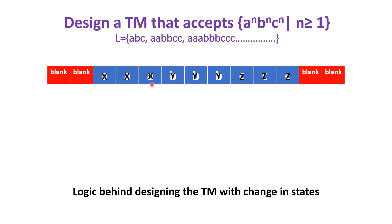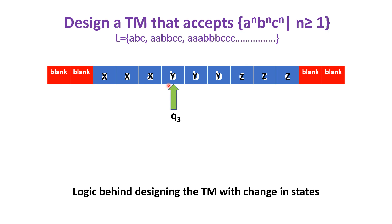Then reset the state to Q0 and move towards the right. Now you can see there is no A — it means all A's are exhausted. Then all B's must also be replaced as Y and all C's must be replaced as Z. So in the tape there must be only X's, Y's and Z's. Only then is the string accepted.